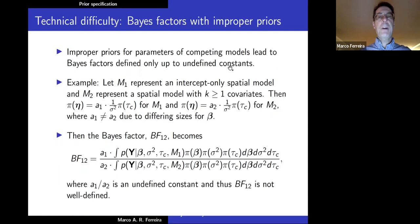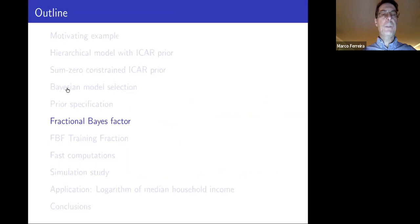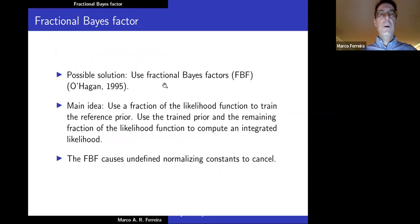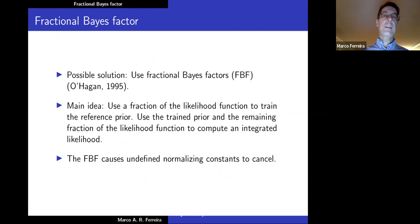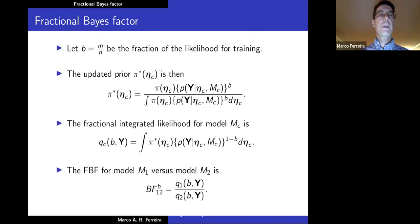Improper priors for competing model parameters lead to Bayes factors defined only up to undefined constants — a well-known problem in Bayesian model selection. To solve this we use the fractional Bayes factor approach, proposed by Tony O'Hagan in 1995. The main idea is to use a fraction b of the likelihood to train the reference prior, then use that trained prior with the remaining fraction (1-b) of the likelihood to compute the integrated likelihood. The fractional Bayes factor causes the undefined normalizing constant to cancel out.